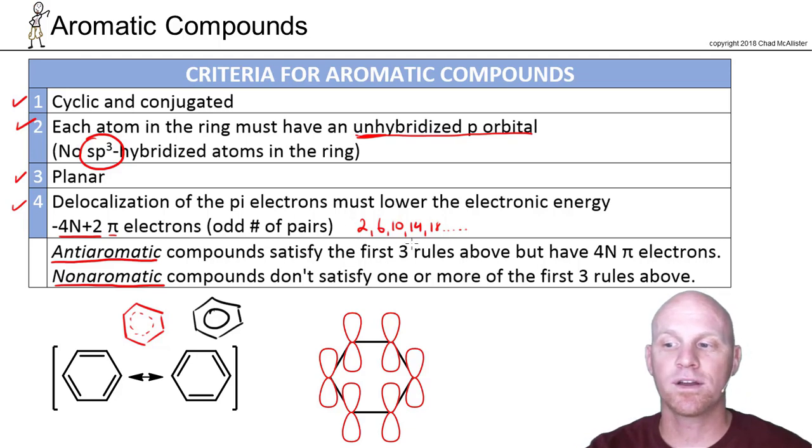If the number of pi electrons matches any one of these numbers in this infinite set, so that is also a requirement needed to be aromatic. So you've got to meet all of these requirements. One of the big mistakes students make is they'll start counting electrons from the get-go, but the first thing you should do is just make sure and verify all three of these first rules.